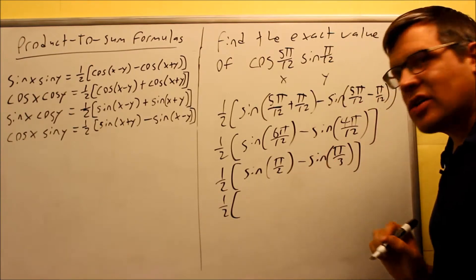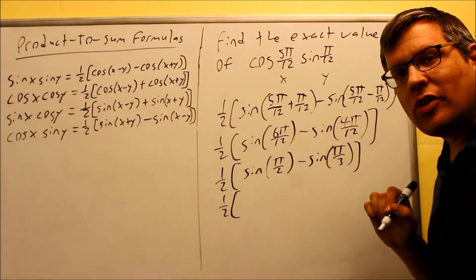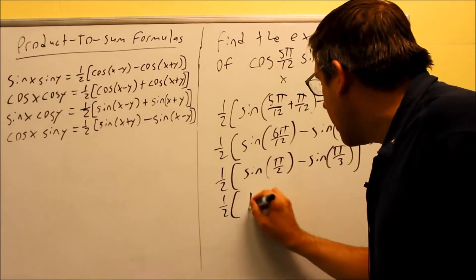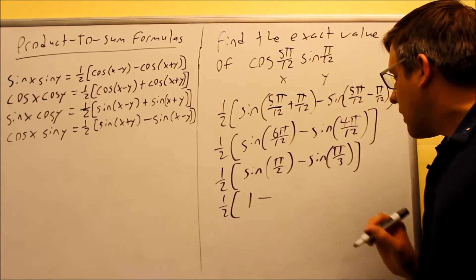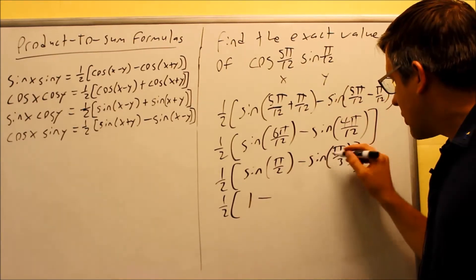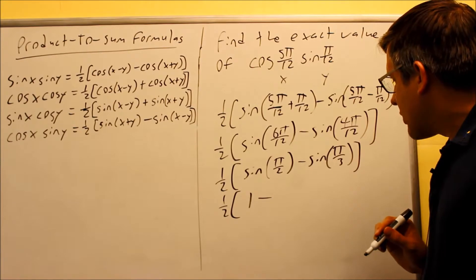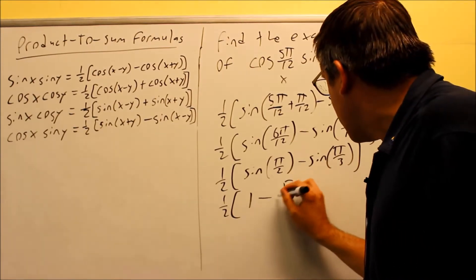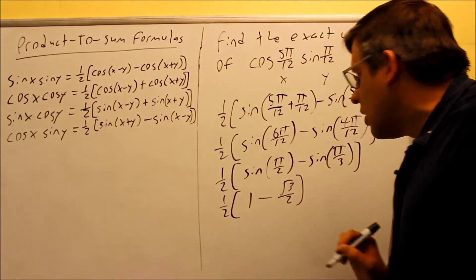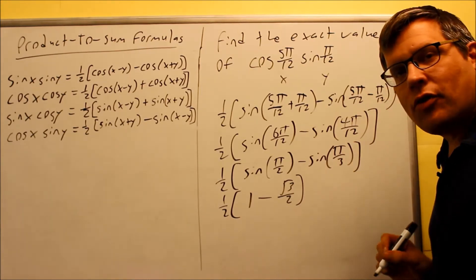So 1/2, sine of π/2 is the y value at 90 degrees, that's going to be 1, and then minus sine of π/3, that's 60 degrees, √3/2 would be the exact value for this one here.